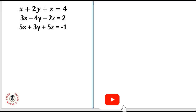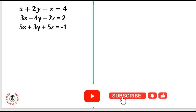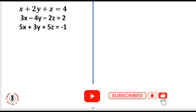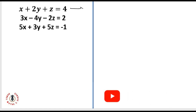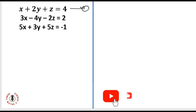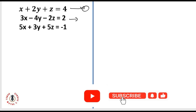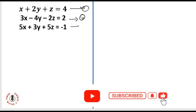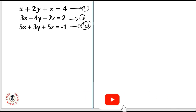Our equation says we have x plus 2y plus z equals 4 as our first equation. Let's tag this equation 1, let's tag this equation 2, and let's tag this equation 3.